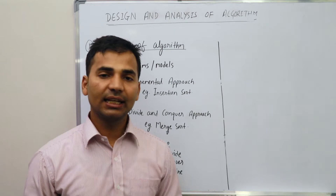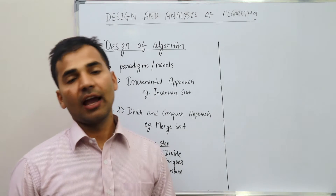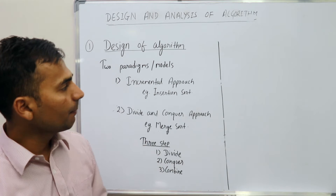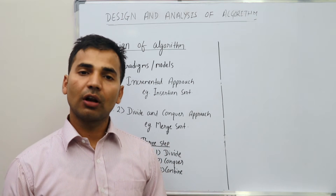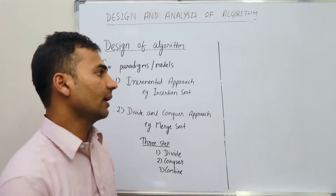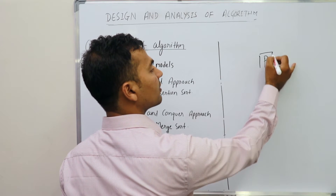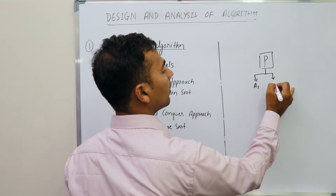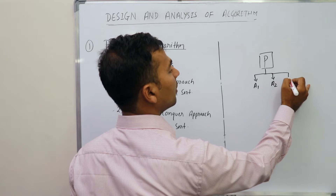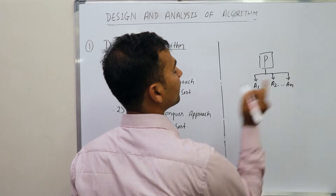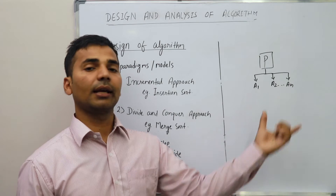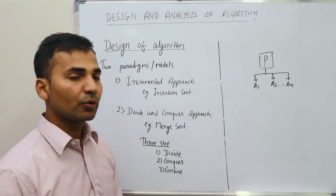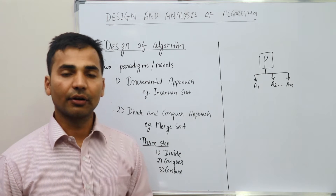Let us talk about designing an algorithm. To solve a problem, we have a set of instructions, but one problem can be solved using different algorithms. Say P1 is a problem — you can solve it with algorithm 1, algorithm 2, or algorithm N. These algorithms A1, A2, and AN can be designed using two methods: one is the incremental approach and the other is the divide and conquer approach.